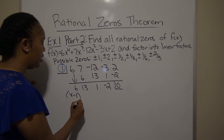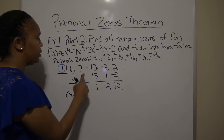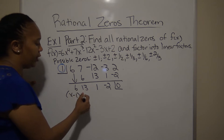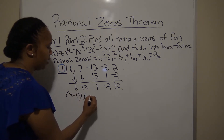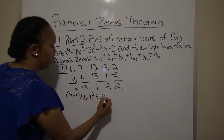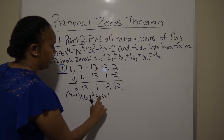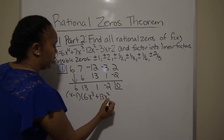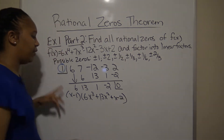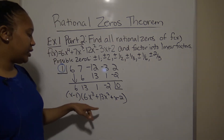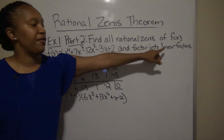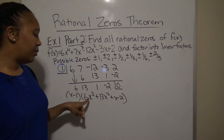Since 1 is a zero, by the Factor Theorem, (x - 1) is a factor. This was a fourth-degree polynomial, so the remaining factor drops one degree: 6x³ + 13x² + x - 2. We need to keep factoring to get all linear factors.